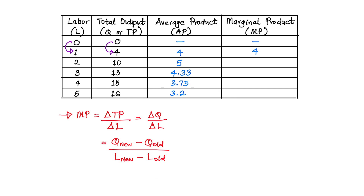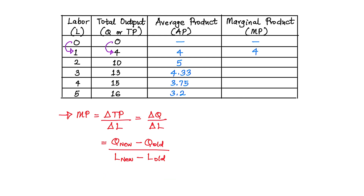Now outputs increased to 10 when we increased the number of labor from 1 to 2. The new level of output is 10 and the old level is 4, divided by the new labor 2 minus the old labor 1. That is 10 minus 4 equals 6, divided by 2 minus 1 equals 1. So 6 divided by 1 is 6 — the additional level of output as a result of one increase in the unit of labor is 6.